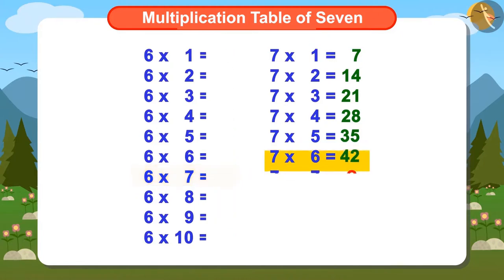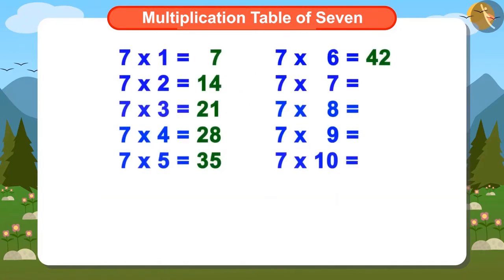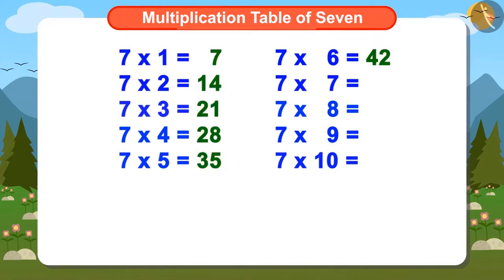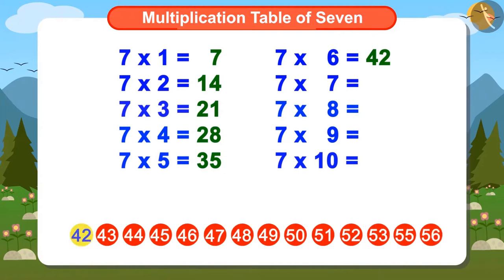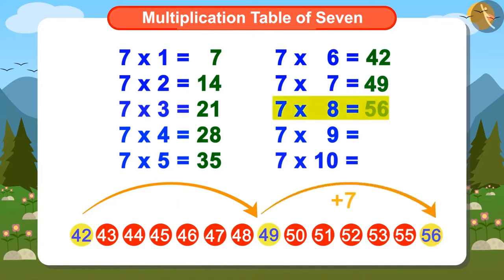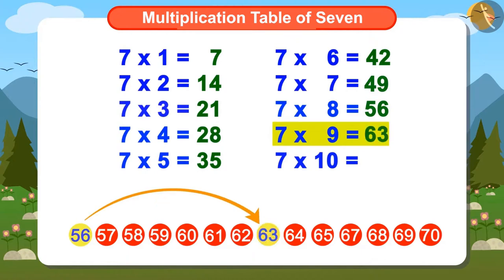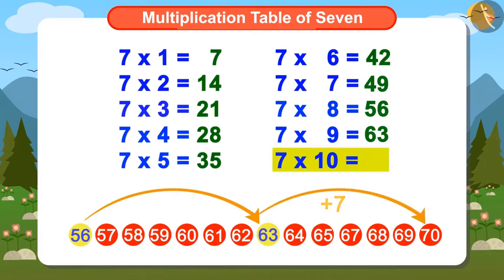Now let's find out 7 multiplied by 7, but we don't know the multiplication table of 7. No problem — we will find the complete multiplication table of 7 using the old method of the number line, in which we see that the 7th number after 42 is 49. 7 multiplied by 8 will be the 7th number after 49, that is 56. 7 multiplied by 9 will be the 7th number after 56, that is 63. And 7 multiplied by 10 will be the 7th number after 63, which is 70.